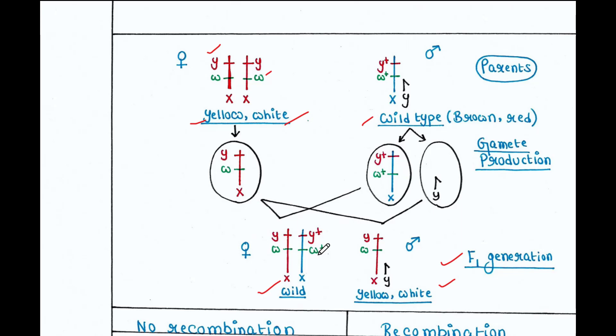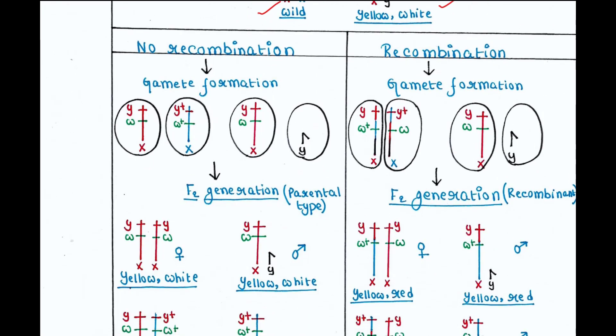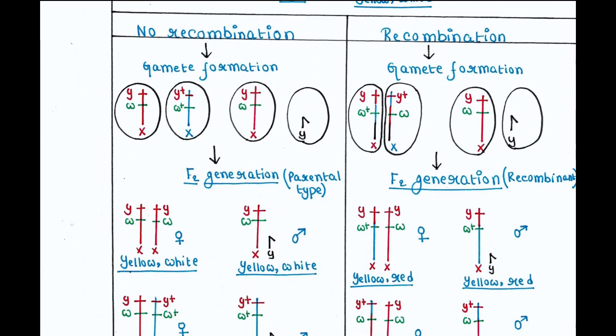One with X chromosome, one with Y chromosome. When these gametes unite, we get two types of progeny in F1 generation. Then he intercrossed these F1 progeny. Here two events can occur. Recombination may or may not occur between two genes during gamete formation or during meiosis. First, let's check if recombination doesn't occur.